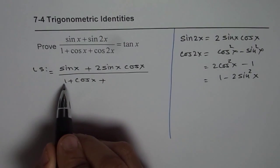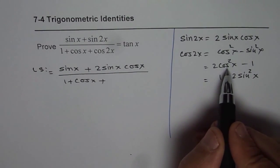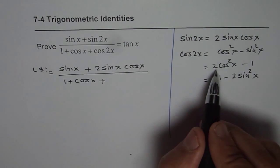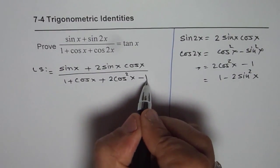One, I take care of this plus 1. Plus 1 minus 1 is 0. Second, I can factor. So factoring is important to simplify. So let us use this one which is 2 cos squared x minus 1.